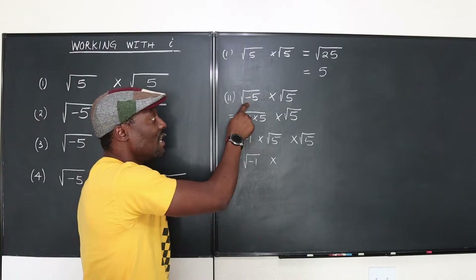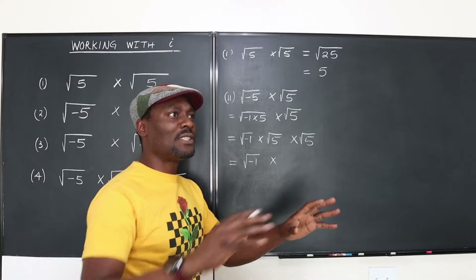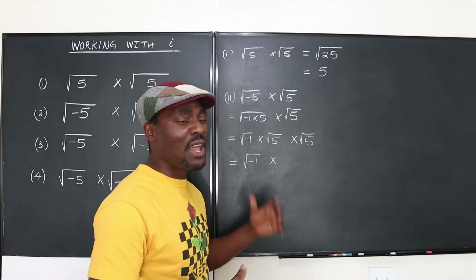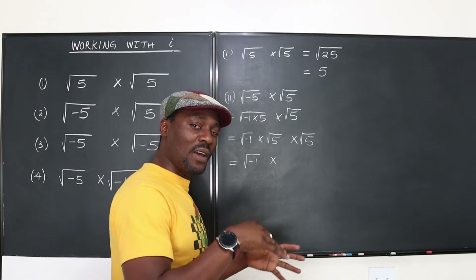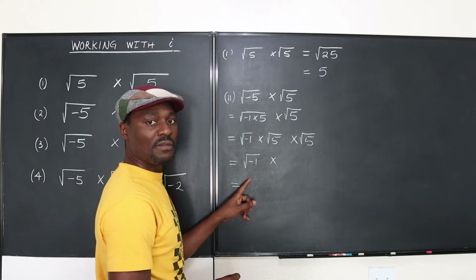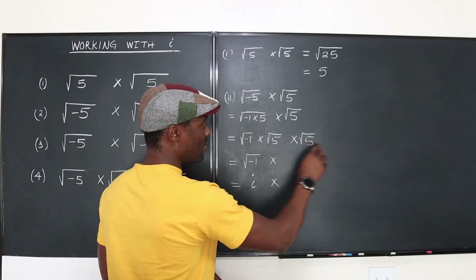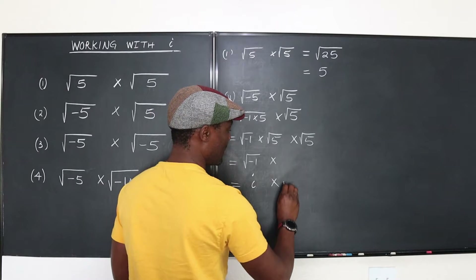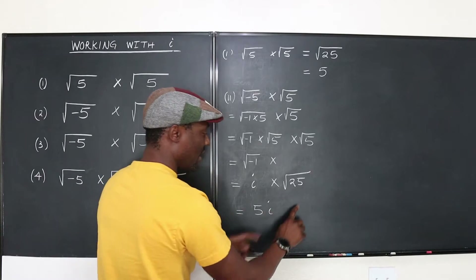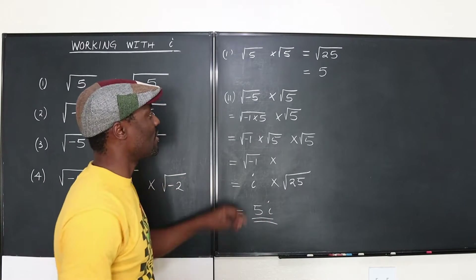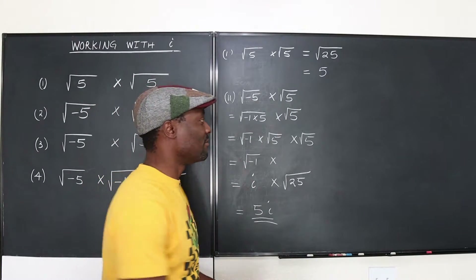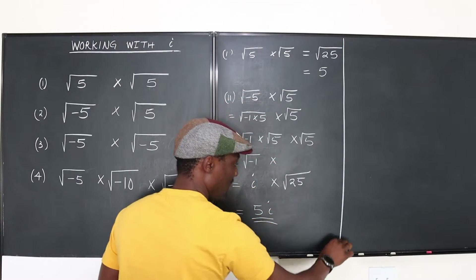Now you can apply the multiplication rule to the two real parts: √5 × √5 = √25 = 5. And √(-1) = i. So the answer to √(-5) × √5 is 5i.